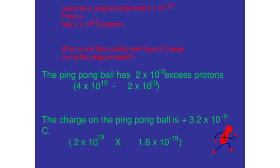Now, let's figure out how much. We are going to subtract the electrons, 2 times 10 to the 10th, from the total protons, 4 times 10 to the 10th. And we find out that we have an excess of 2 times 10 to the 10th protons. Now, we're going to multiply it by the charge on each proton. So 2 times 10 to the 10th times 1.6 times 10 to the negative 19th tells us that the charge on this object, this ping pong ball, is a positive 3.2 times 10 to the minus 9th.